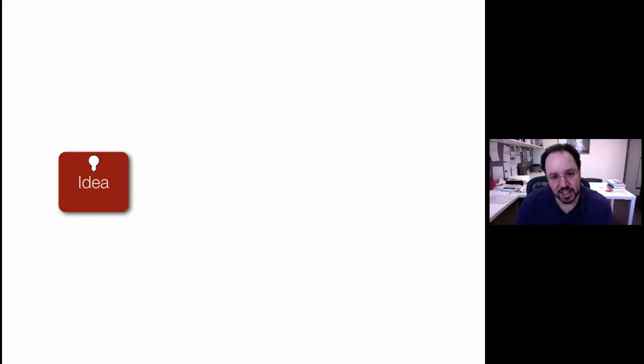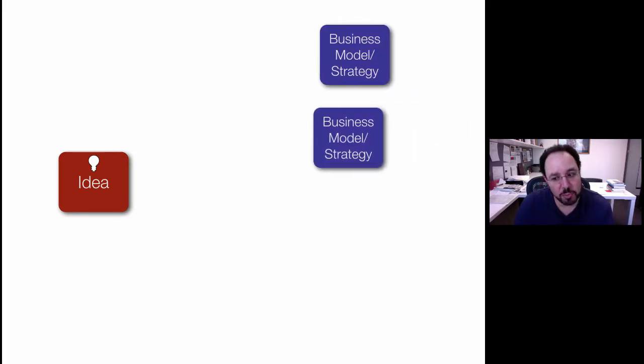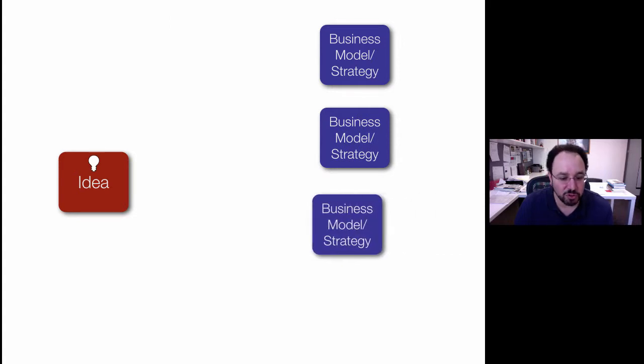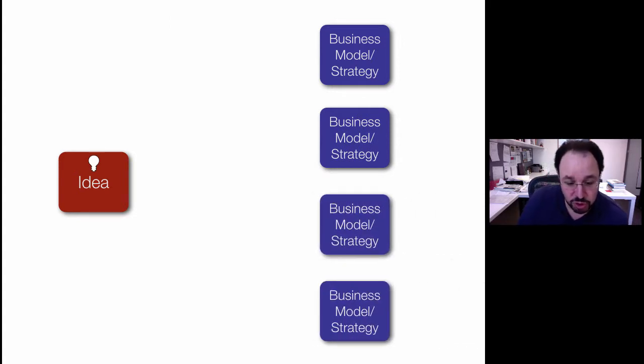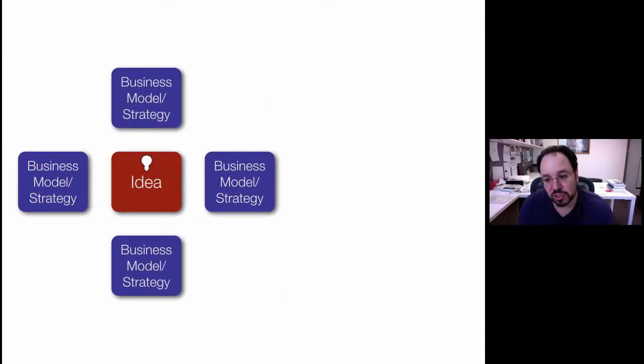So you want to separate out the idea from the strategy and that will present you numerous options of business model strategies that you could use and could be associated with the ideas. And what we want to try and understand is how do you find those strategies to give you that choice? And then how do you choose amongst them?